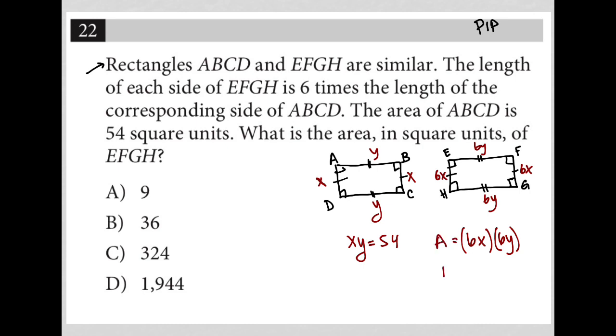When I simplify that, I get 36XY. Now, because I know that XY is 54, right? XY is 54. Then I know the area for rectangle EFGH should be 36 times 54.